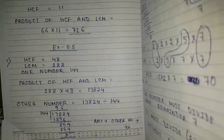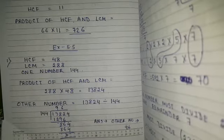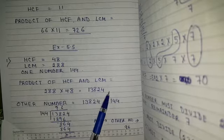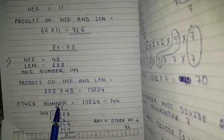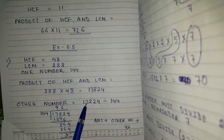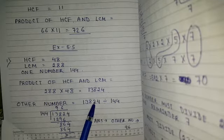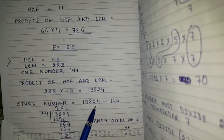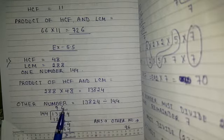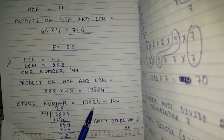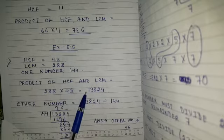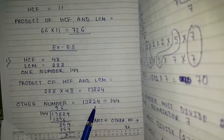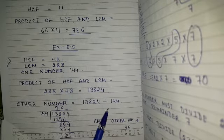First we will find the product of HCF and LCM: 288 into 48 equals 13824. When finding the other number, we use the formula product of two numbers equals HCF into LCM. So the other number equals product of HCF into LCM divided by the one number, which is 13824 divided by 144.